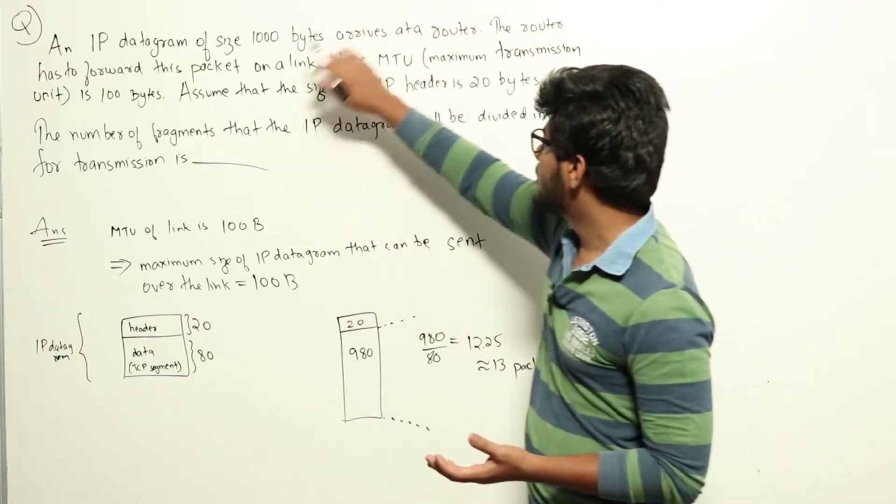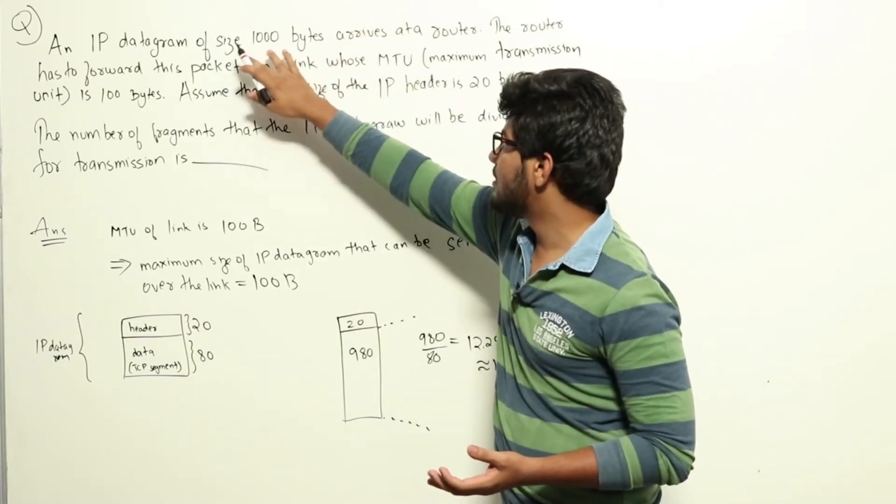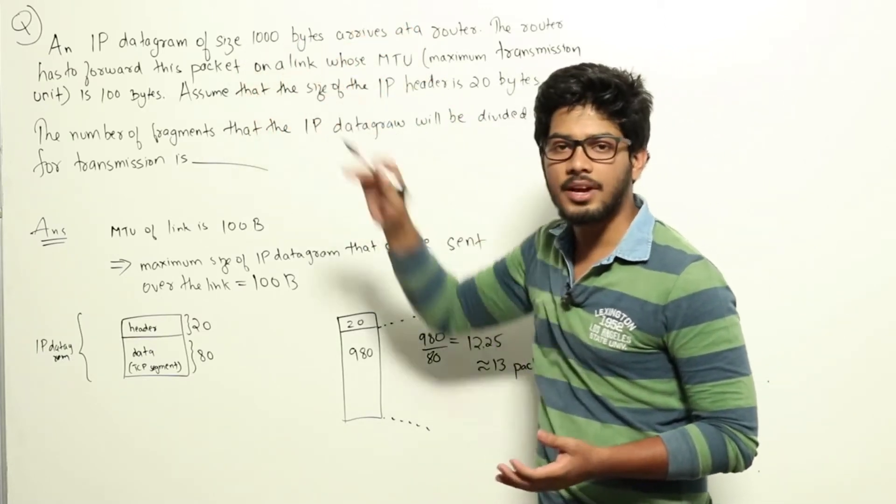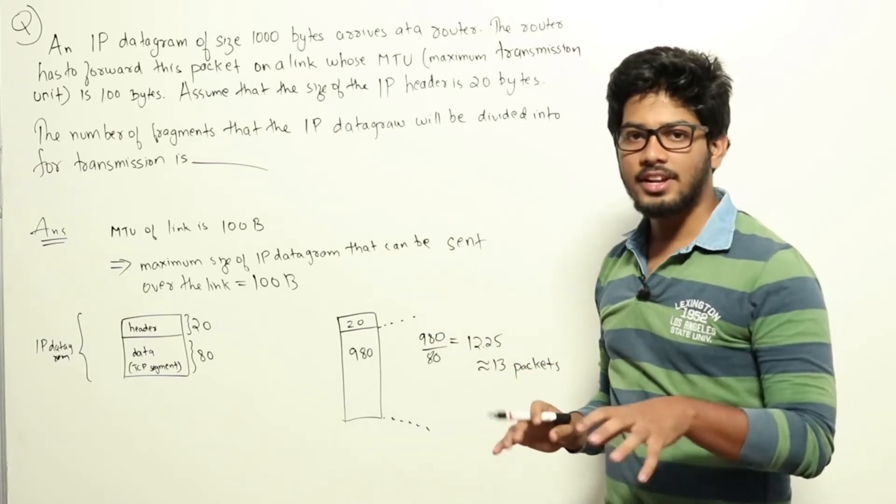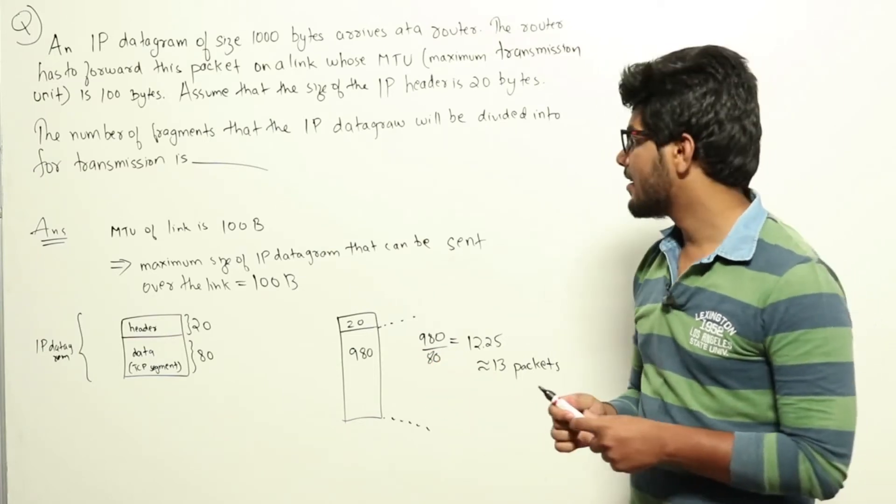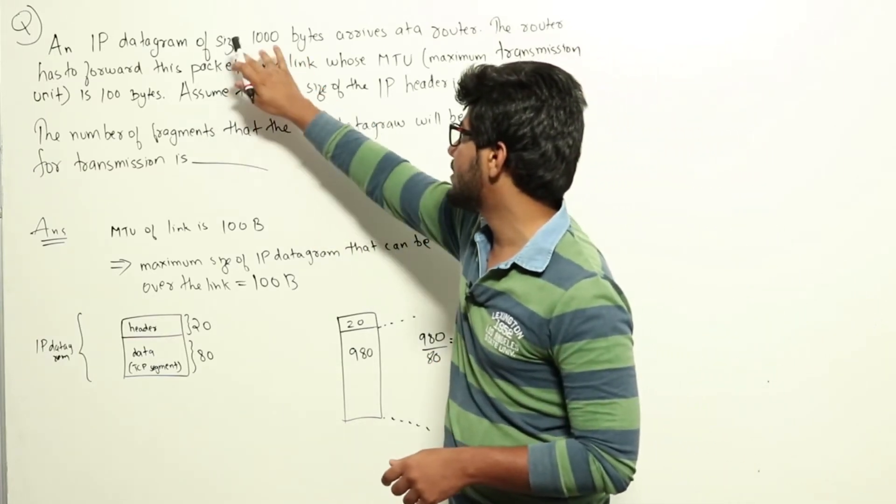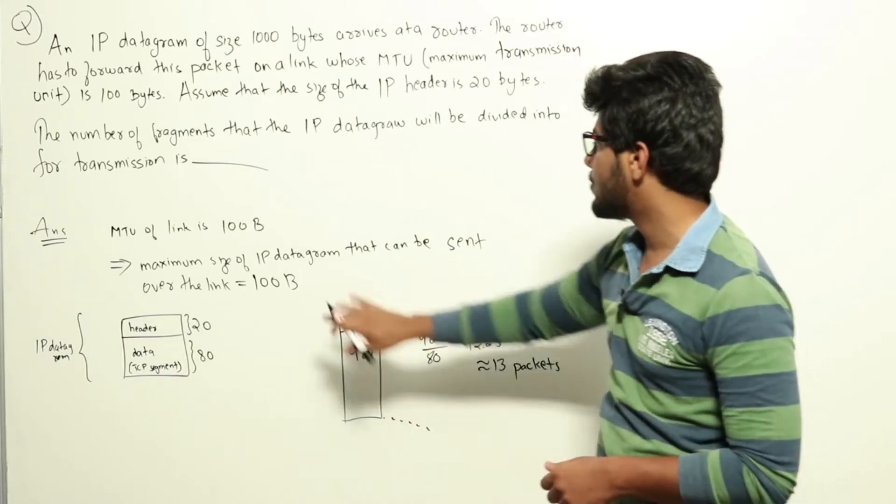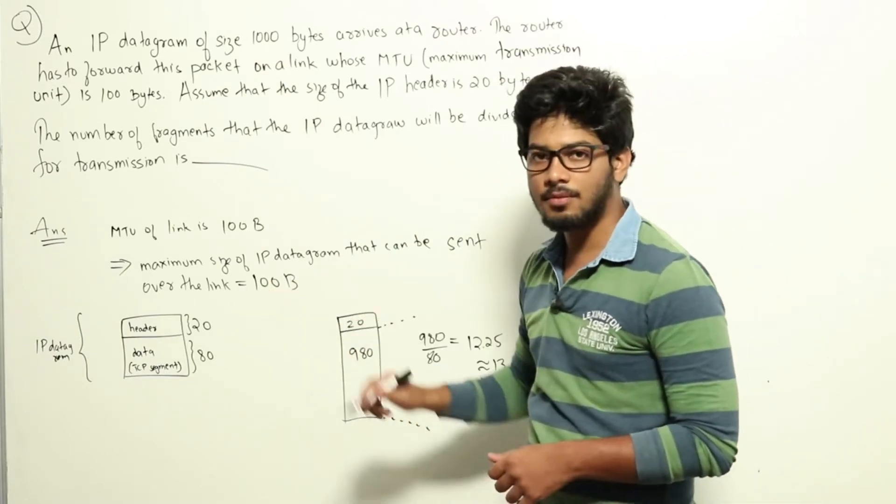The router will have to divide this IP packet which arrives of size 1000 bytes into smaller packets, smaller IP datagrams, and then after that the router needs to send it over the link. Because the link can't support an IP datagram of size 1000 bytes, it can only support an IP datagram of size 100 bytes.